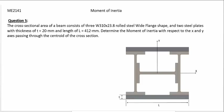This question is about moment of inertia and the parallel axis theorem. The cross-sectional area of a beam consists of three W310 by 23.8 wide flange shapes and two steel plates placed on top and bottom. Each plate has a thickness of 20 mm and a length of 412 mm. We are to determine the moment of inertia with respect to the X and Y axes passing through the centroid of the cross-section.